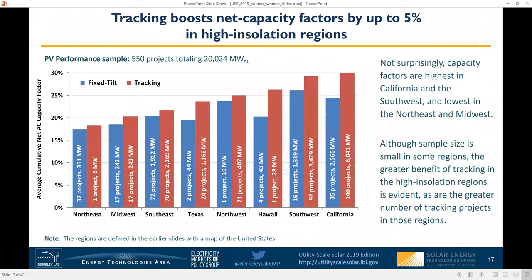For those who prefer to think geographically rather than in terms of insolation, this graph breaks out the same capacity factor data on a regional basis. The overall rankings shouldn't be too surprising — the Northeast and Midwest have the lowest capacity factors, while the Southwest and California have the highest. Tracking provides more of an incremental benefit over fixed tilt in the high capacity factor regions than in the lower capacity factor regions, and as a result we see a lot more tracking than fixed tilt projects in those high capacity factor regions.